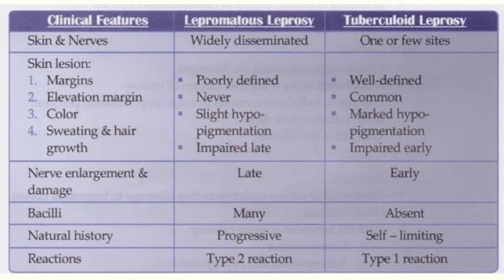Lepromatous leprosy is progressive while tuberculoid leprosy is self-limiting. Regarding reaction types: Type 2 reaction occurs in lepromatous leprosy, and Type 1 reaction occurs in tuberculoid leprosy.